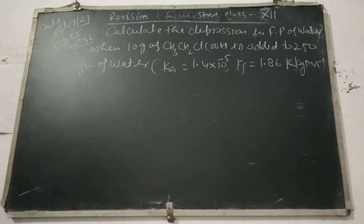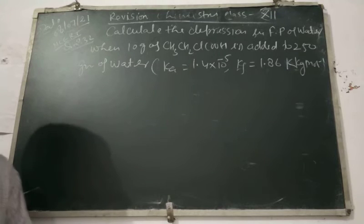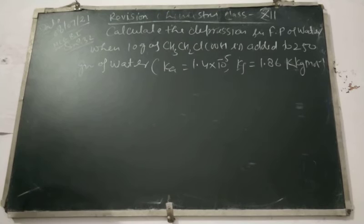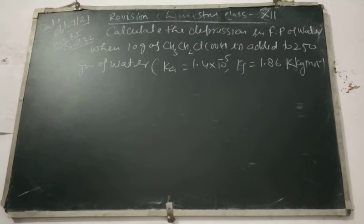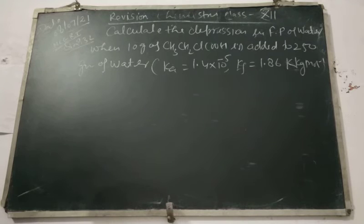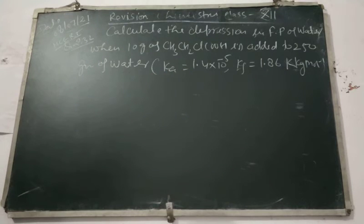Good morning students. Today we are going to discuss some numerical problems based on depression in freezing point and elevation in boiling point. This question is NCERT Exercise 2.32: Calculate the depression in freezing point of water when 10 grams of CH3CH2ClCOOH, means 2-chloropropanoic acid, is added to 250 grams of water. Given: dissociation constant of acid Ka is equal to 1.4 × 10⁻⁵.